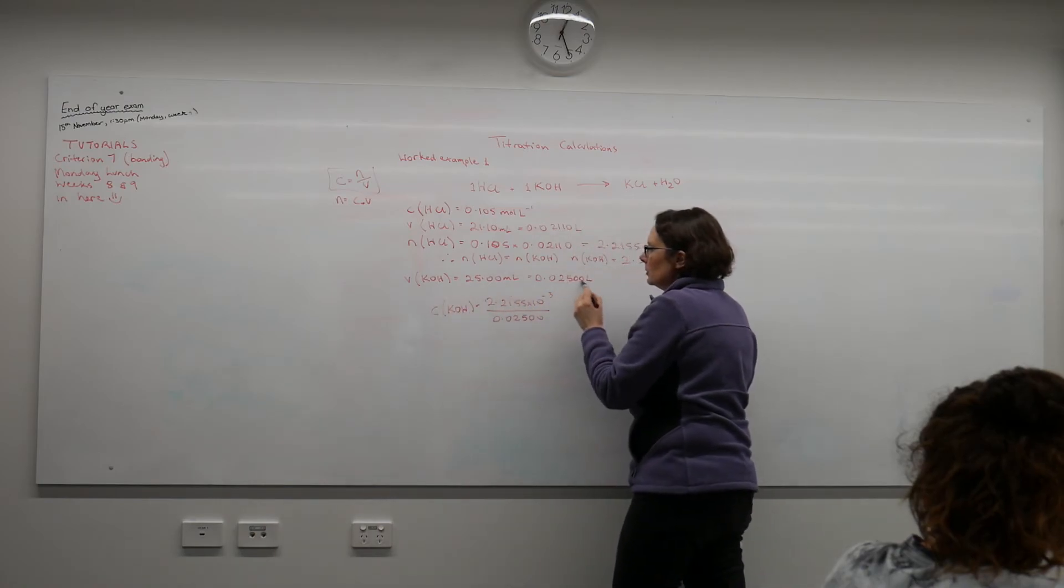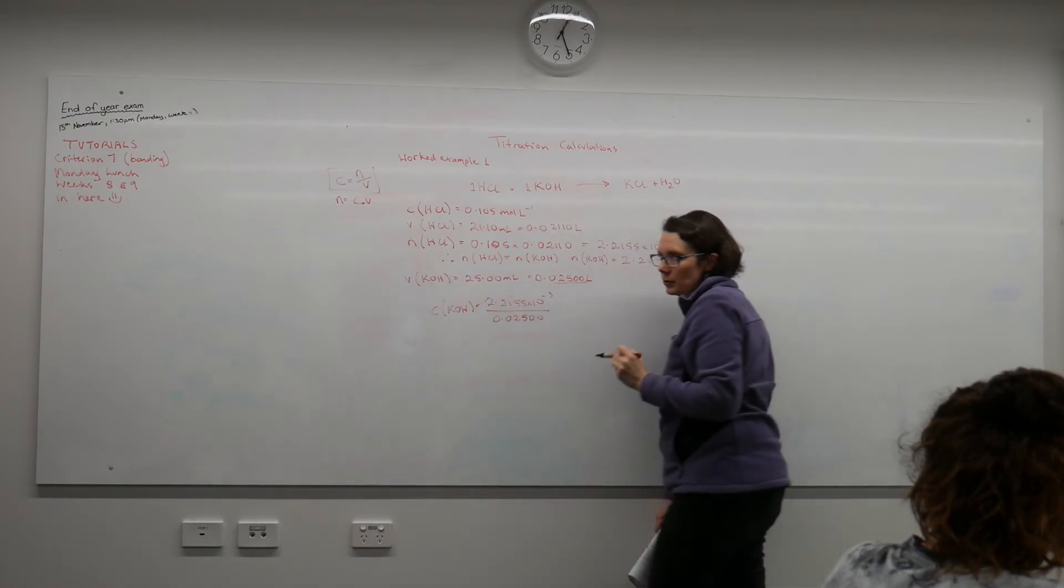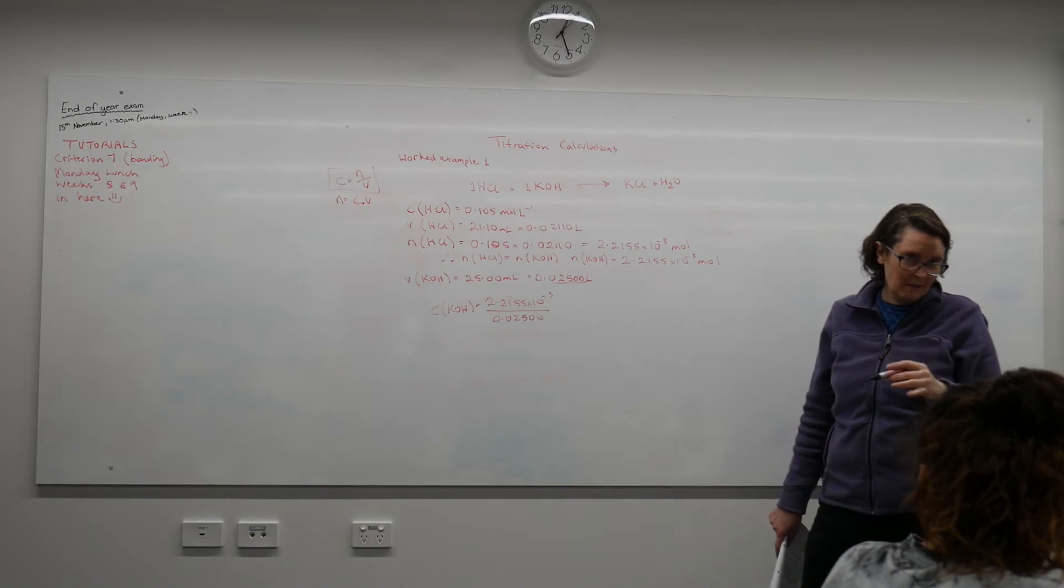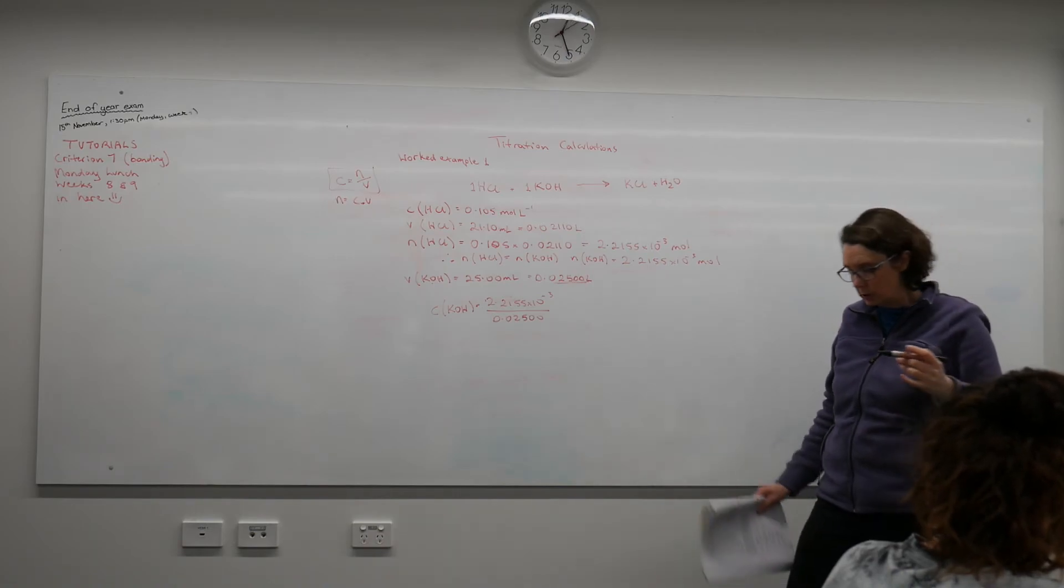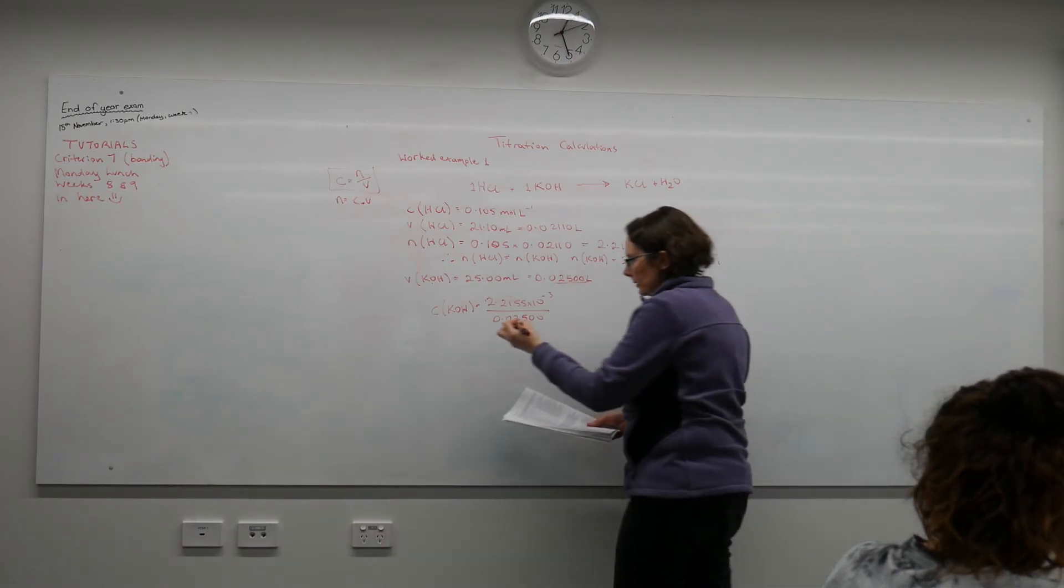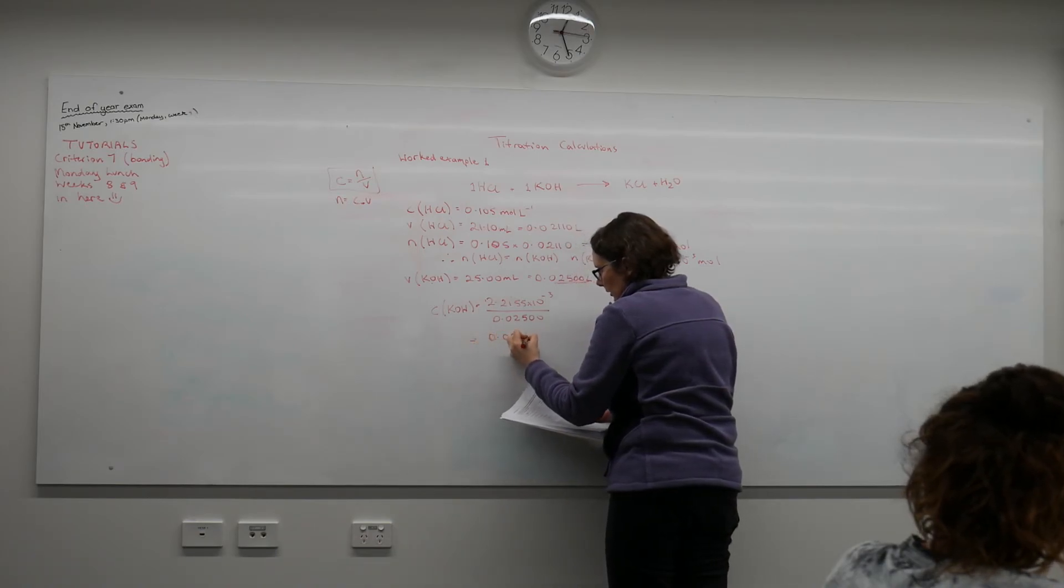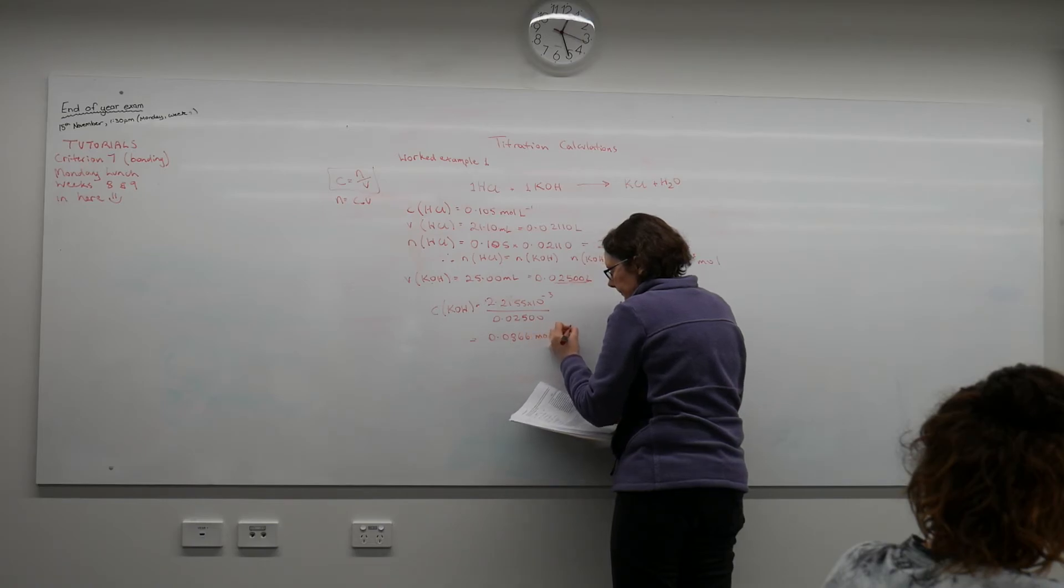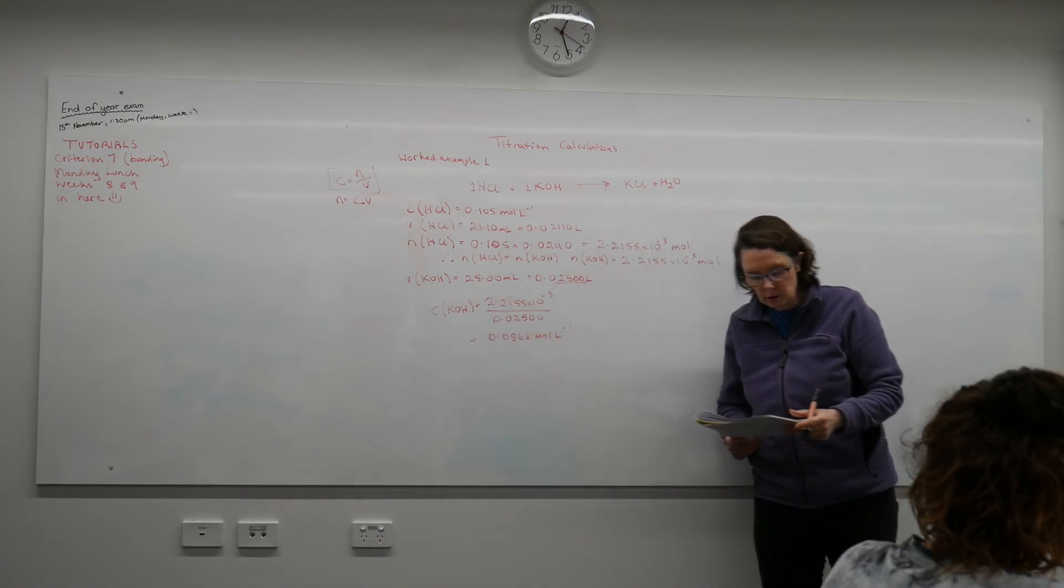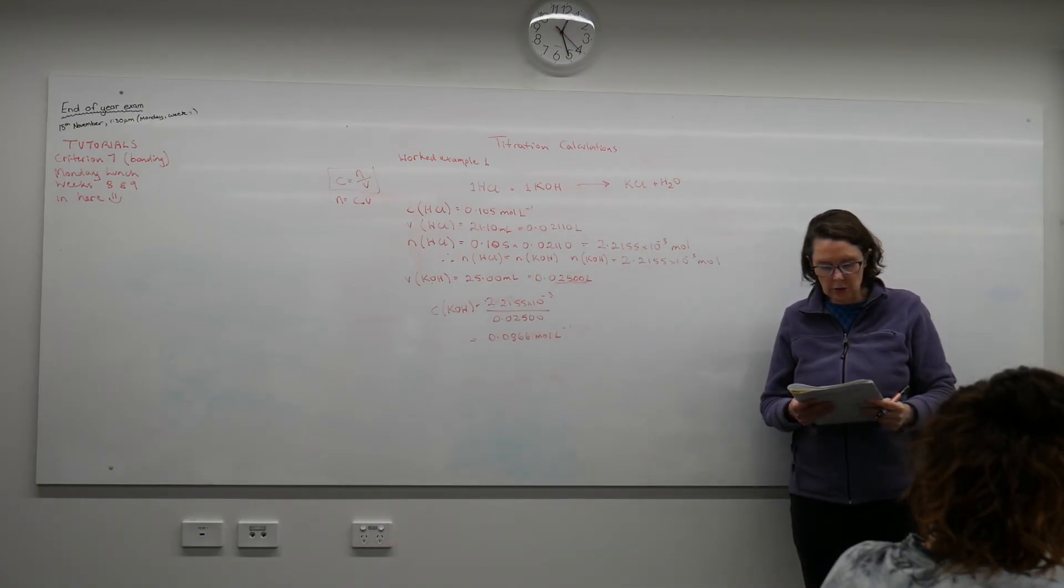The volumes have to match up with the solution. Getting the volumes mixed up is the most common error that students make. Which then gives us a value of 0.0866 moles per litre for our concentration of potassium hydroxide.